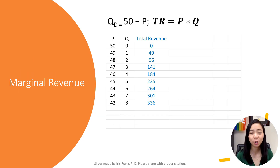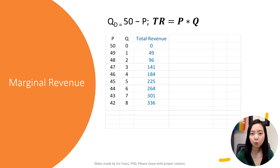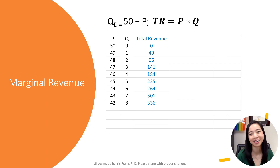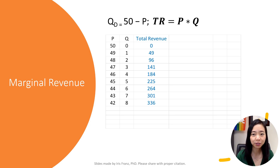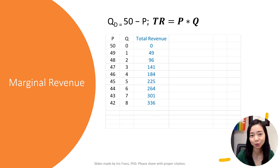With the information of price and quantity demanded, I can calculate my total revenue. Total revenue is equal to price times quantity. When the price is $50, quantity demanded is 0, so my revenue is 50 times 0, which gives me $0. When the price is $49, quantity demanded is 1, so my revenue is $49 times 1, which gives me $49. When the price is $48, quantity demanded is 2, so my total revenue is $48 times 2, which gives me $96, and so on.